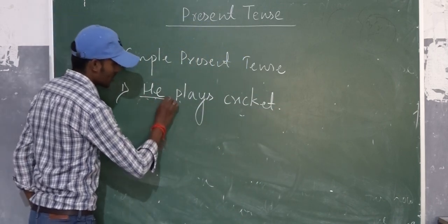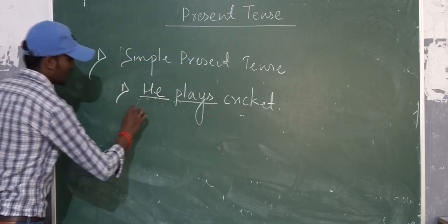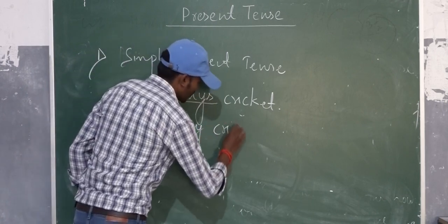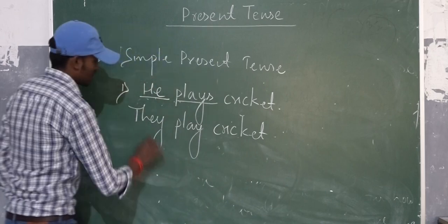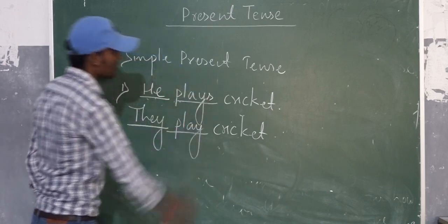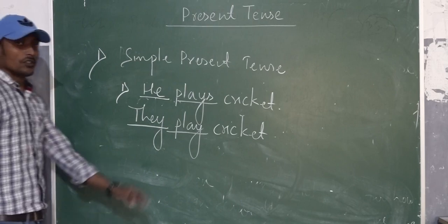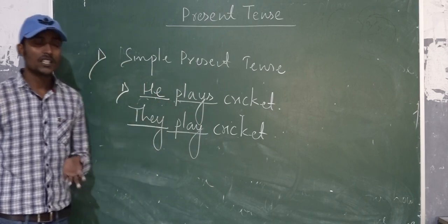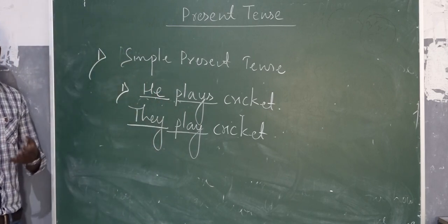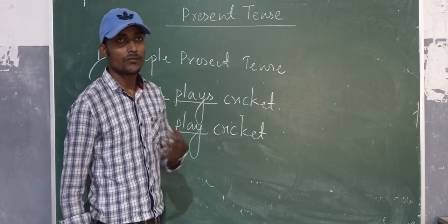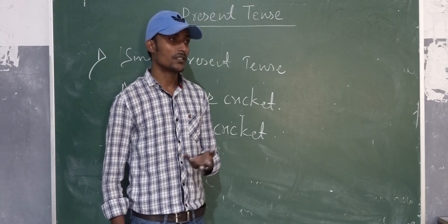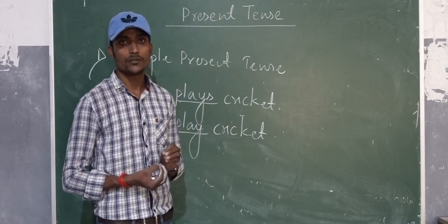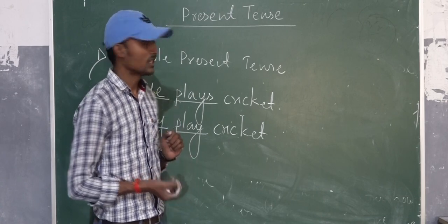One basic thing: you should always remember the formula in your mind. The main thing is that you have to learn verbs. Every day, you should read four or five verbs per day. Then you will strengthen your vocabulary. You will be able to make your vocabulary strong. Clear? Thank you.